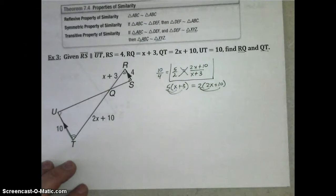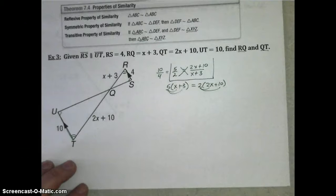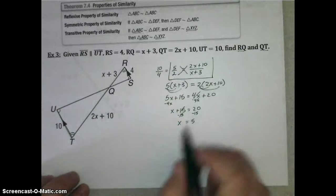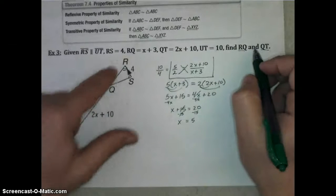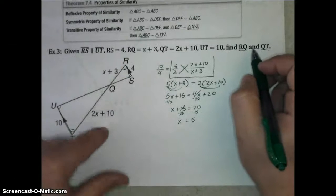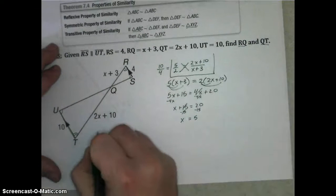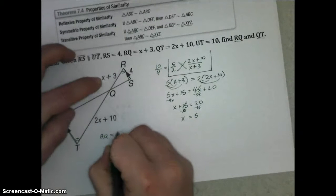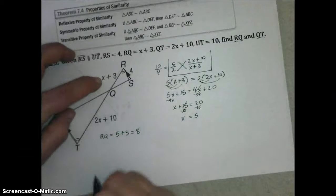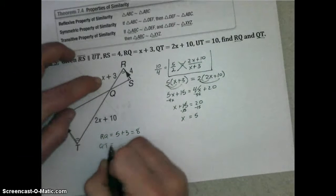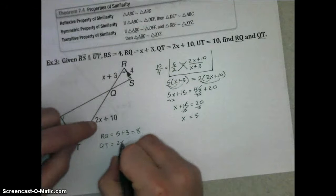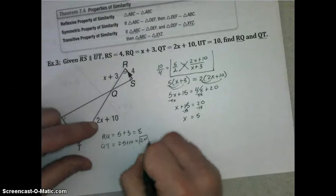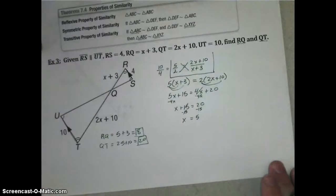All right, if you need any more time, again, pause the video, but we are ready to look at our answer, and here's what we should get. X equals 5. Now to find RQ and QT, we just need to plug that back in. So RQ is X plus 3, which is 5 plus 3 now, which is 8. And QT is 2 times 5 plus 10, which is 10 plus 10, or 20. Those are your answers for RQ and QT.